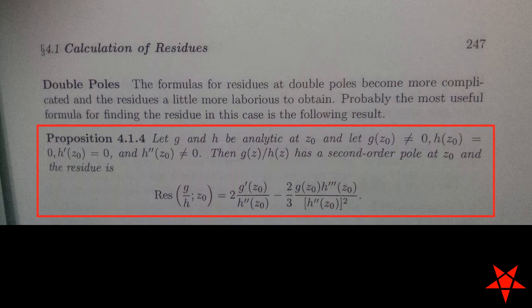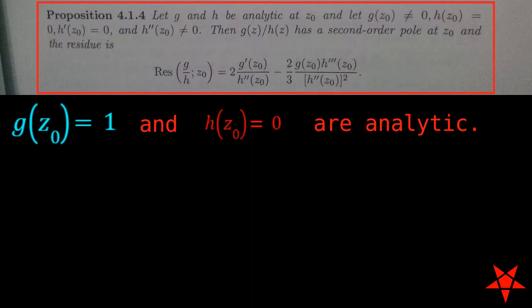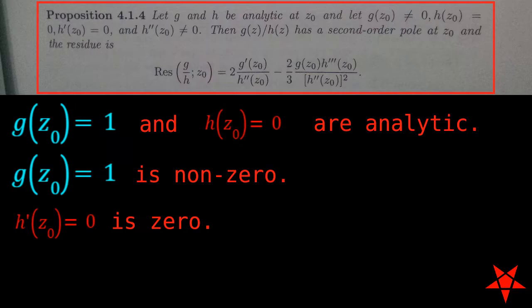Proposition 414 on page 247, also used in Part B of the previous episode, requires the following: Functions g and h must be analytic at z0, g of z0 must be nonzero, h prime of z0 must be zero, and h double prime of z0 must be nonzero.